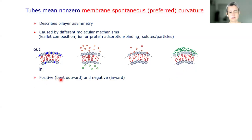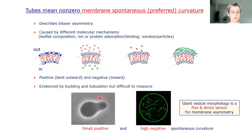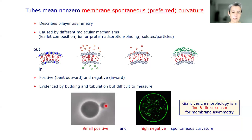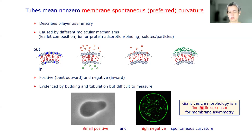The nomenclature is such that if the membrane bends outward the curvature is positive; if it bends inward it is negative. Here is an example of small positive curvature — the bud produced is large, so this is small outward positive curvature — and here is negative high curvature. The message is that just looking at giant vesicle morphology you have a kind of direct and fine sensor for membrane asymmetry.